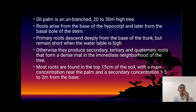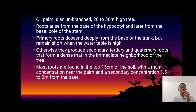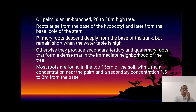The oil palm is an unbranched plant that grows 20 to 30 meters high. Roots arise from the base of the stem. Primary roots are also known to have strong roots, basically formed from the base of the trunk but remain short when the water table is high. Otherwise, they produce secondary, tertiary, and quaternary roots. Most roots are found in the top 50 cm of the soil, with main concentration near the plant and secondary concentration at 1.5 to 2 meters from the base.